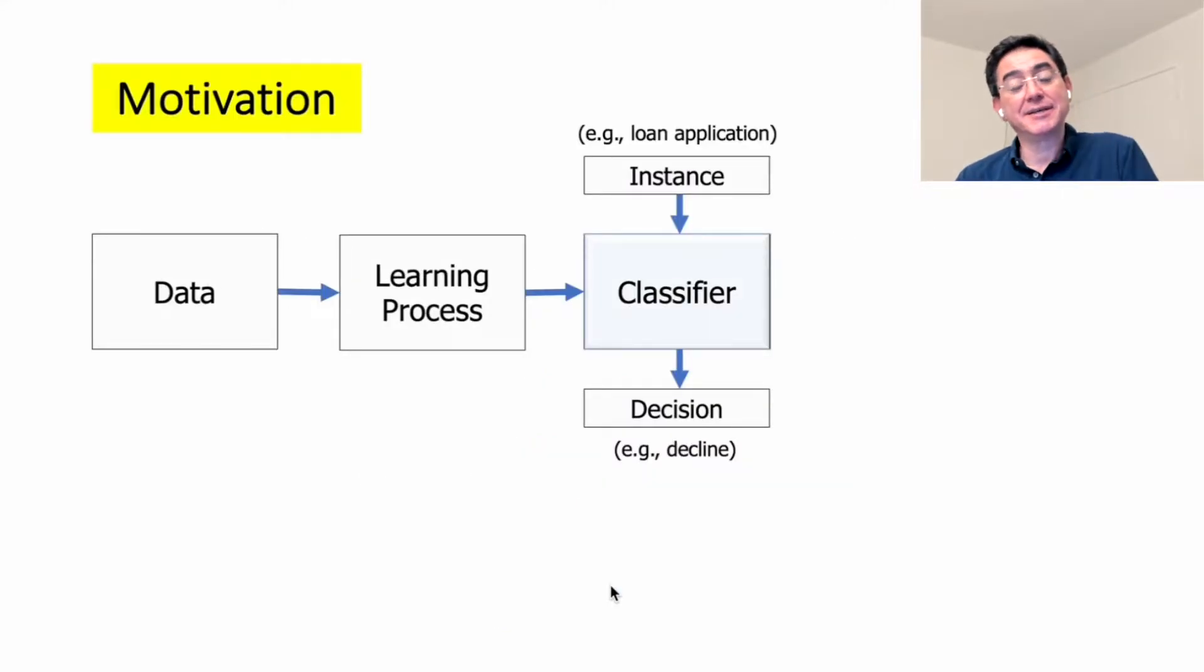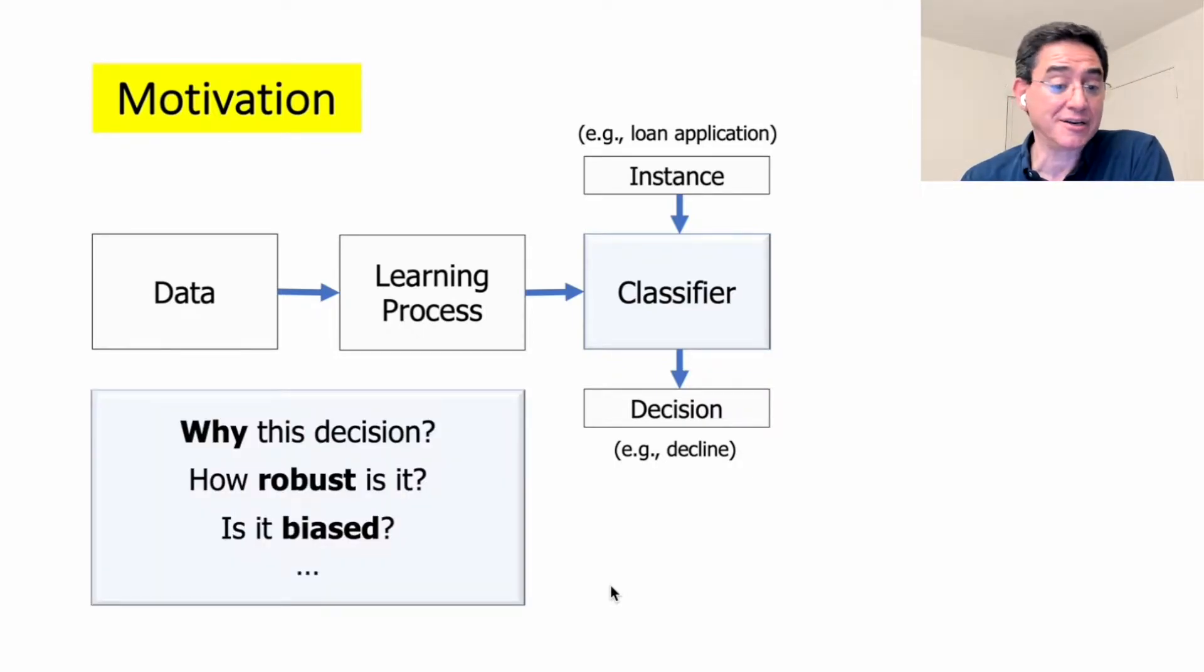Our interest here is in developing a theory for explaining the behaviors of classifiers. These are boxes learned from data, they take instances, render decisions on them, and we're interested in questions like these. Why was a particular decision made? Is it robust? Is it biased?